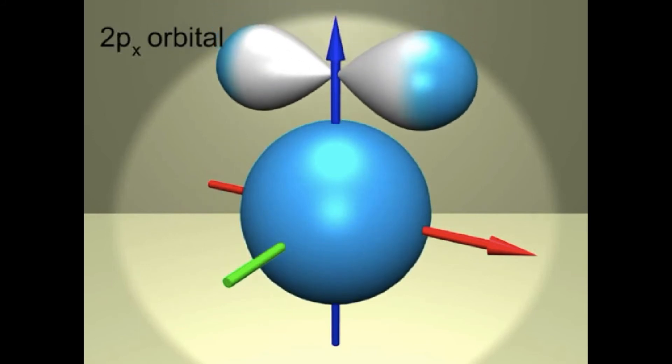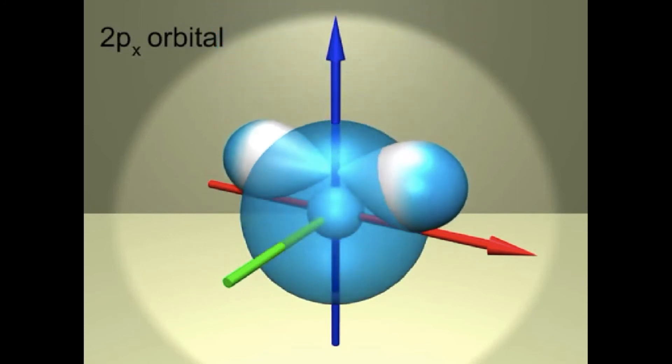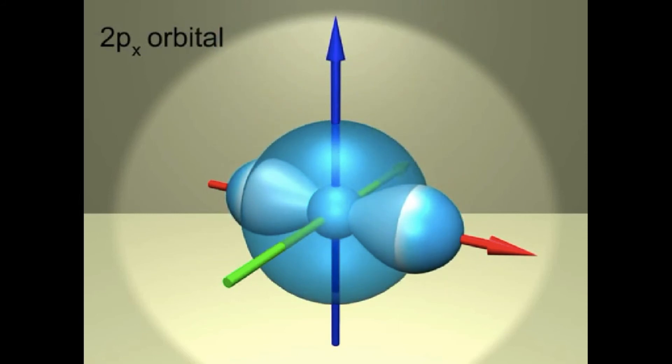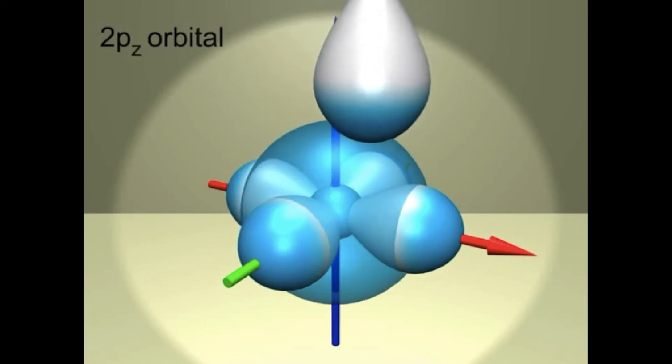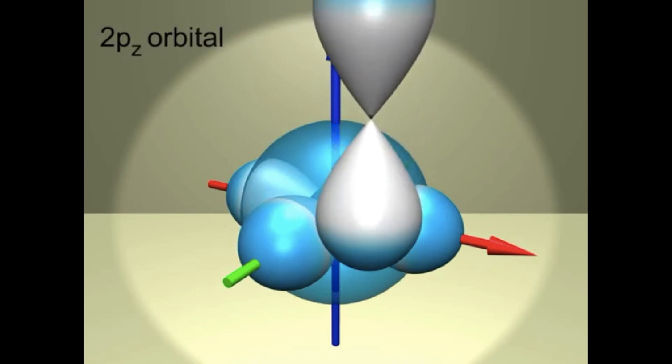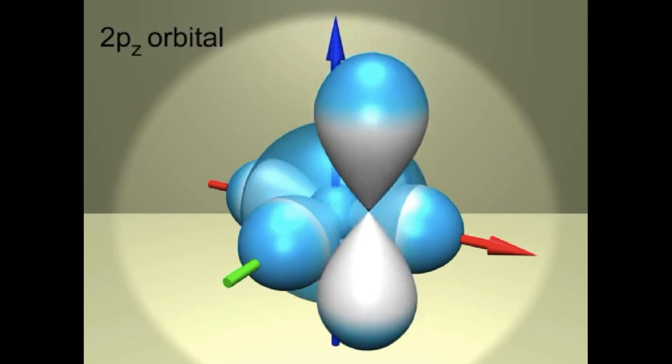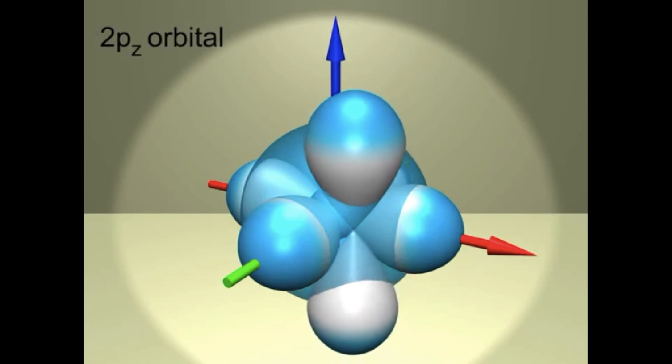This is 2P-X orbital because it is on the X-axis. Notice that it's a dumbbell shape. This is an example of 2P-Y orbital. And this one is 2P-Z orbital. All P-orbitals are dumbbell shape.